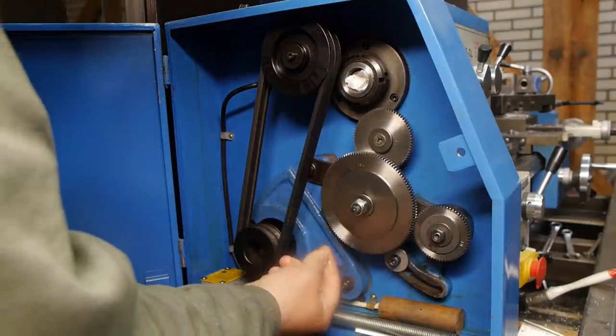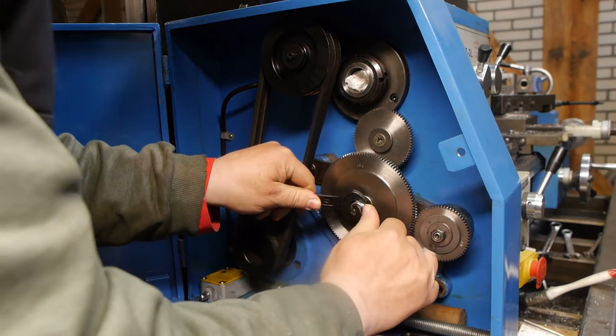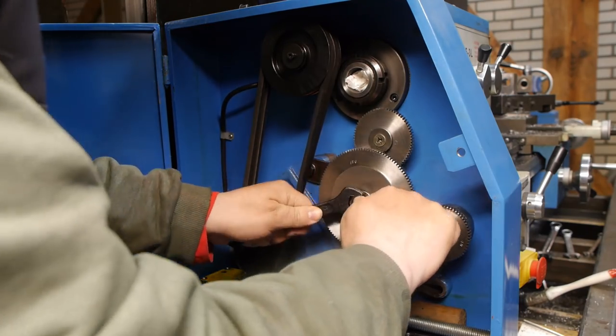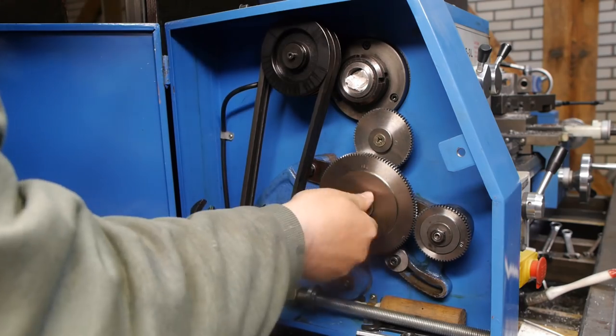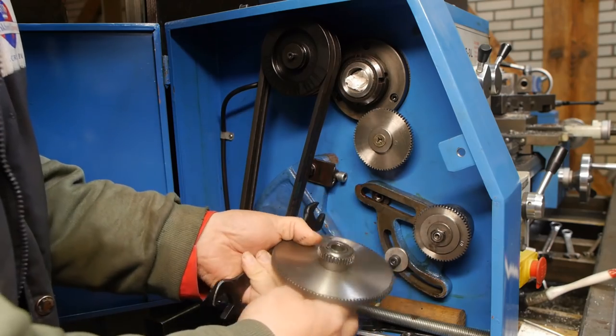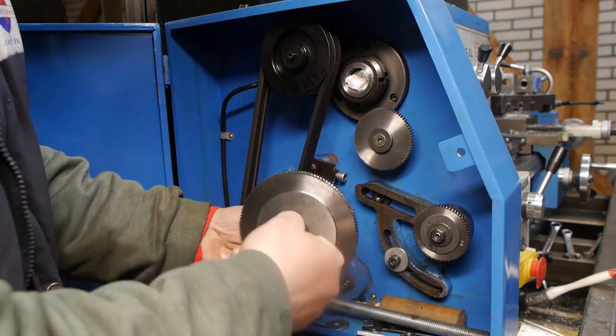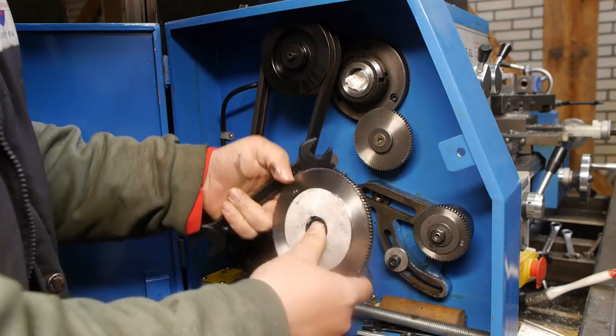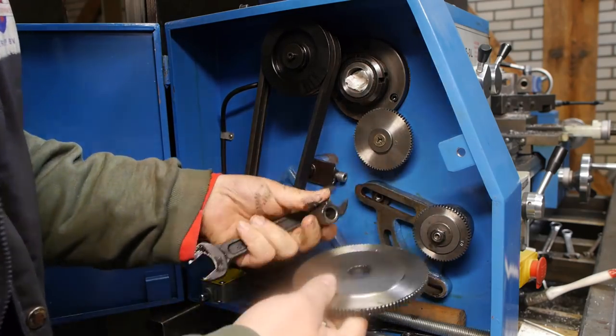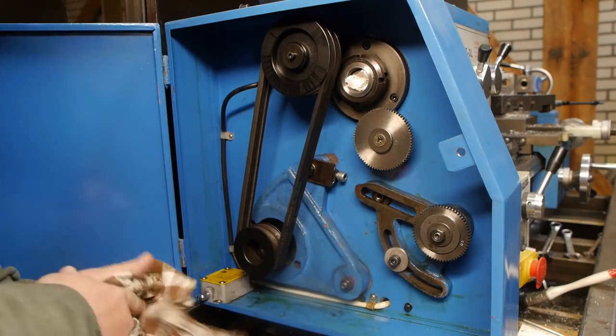The seal on the input shaft is leaking a little bit so there's always some oil in the bottom of the gear cover. I guess it's something to look at later. Changing gears on this lathe is usually a bit of a struggle as the fit on these Chinese gears isn't that great, but this time it wasn't too bad as most of the gears have been used before.